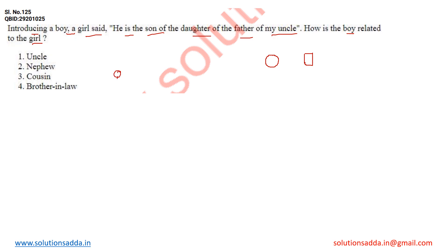There is a boy and a girl in this question. Let's name this person B and this girl is A. The girl said that person B is the son of the daughter of the father of my uncle.